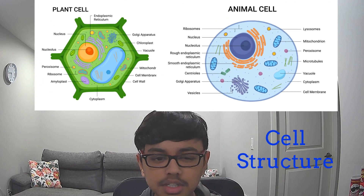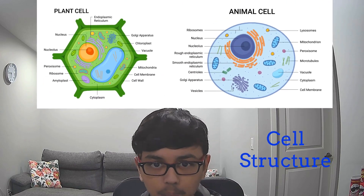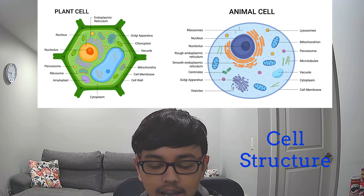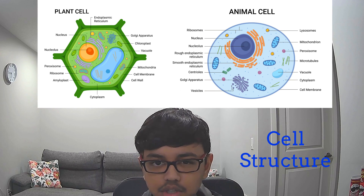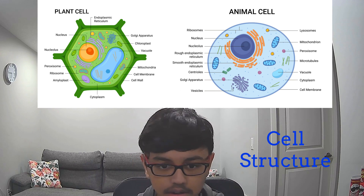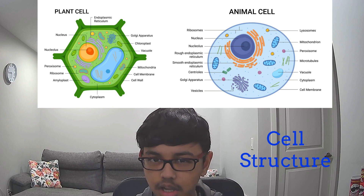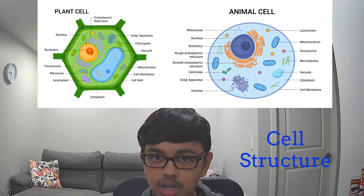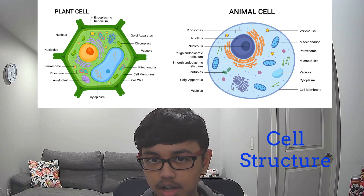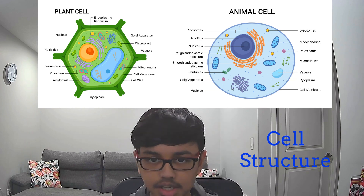The first one is the structure of the plant cell. You can see that the plant cell looks more like a rectangle, while the animal cell looks like an oval or a circle. You can also notice that in the plant one, the structure looks kind of rough, while the animal one looks a little smoother.